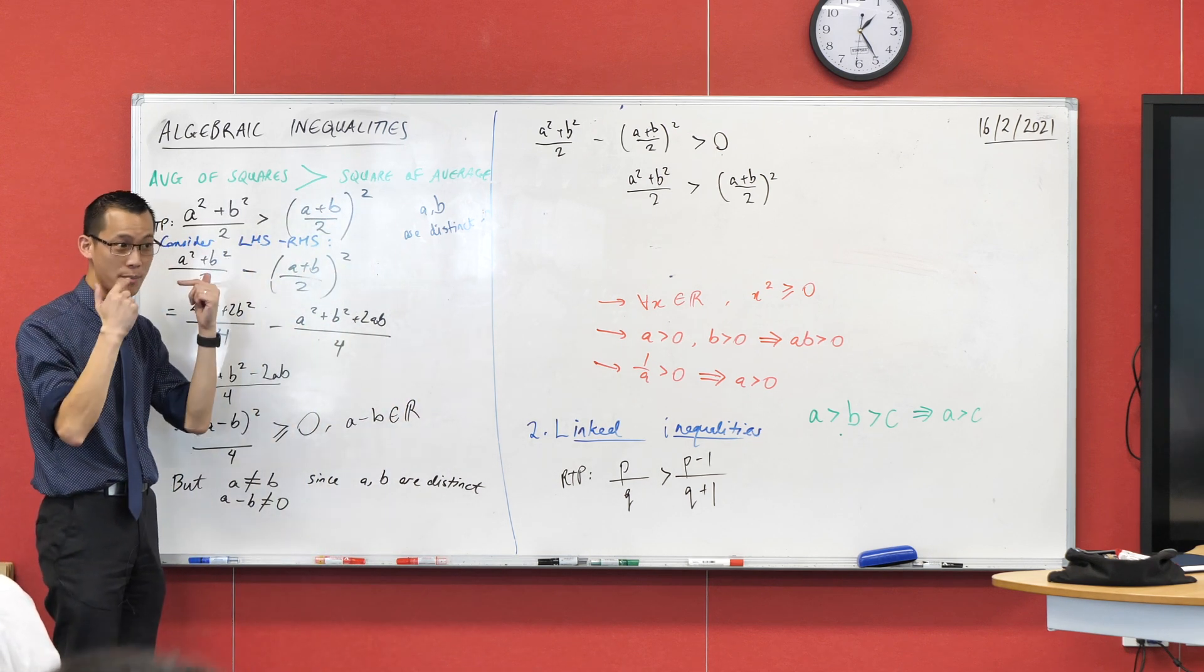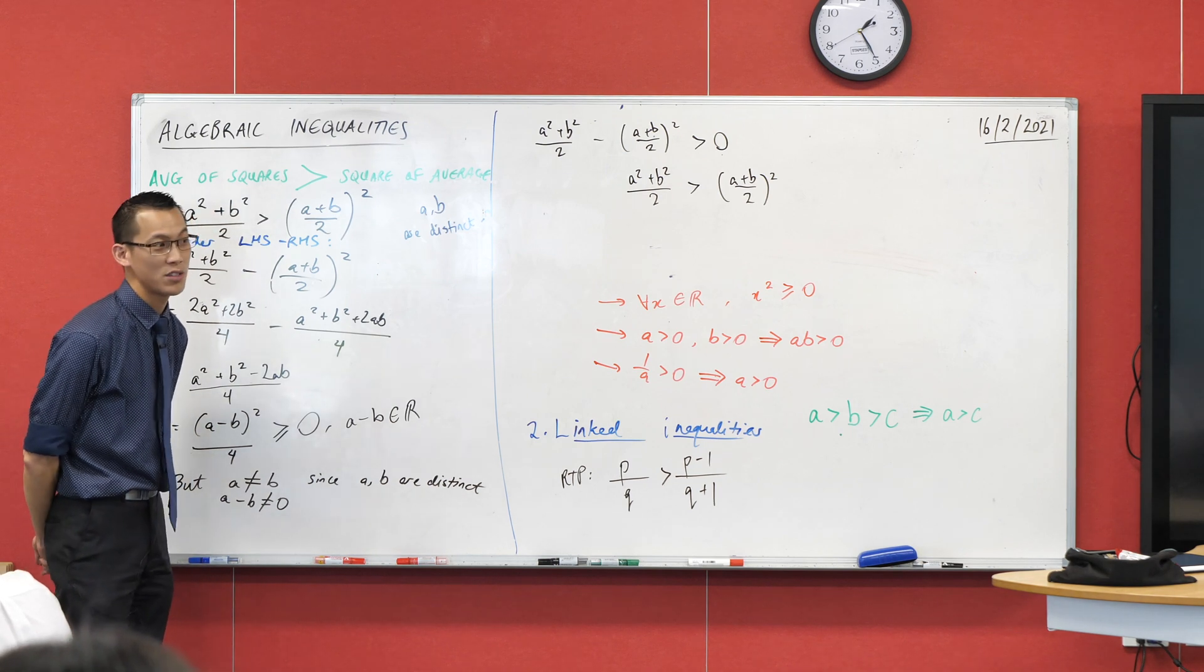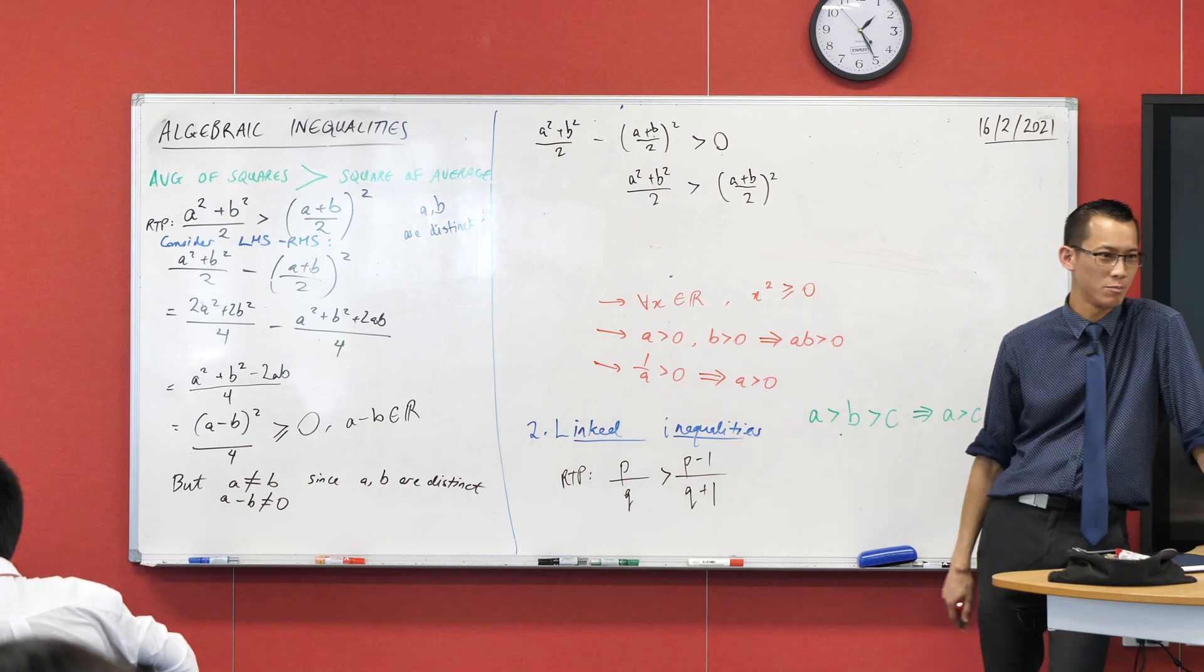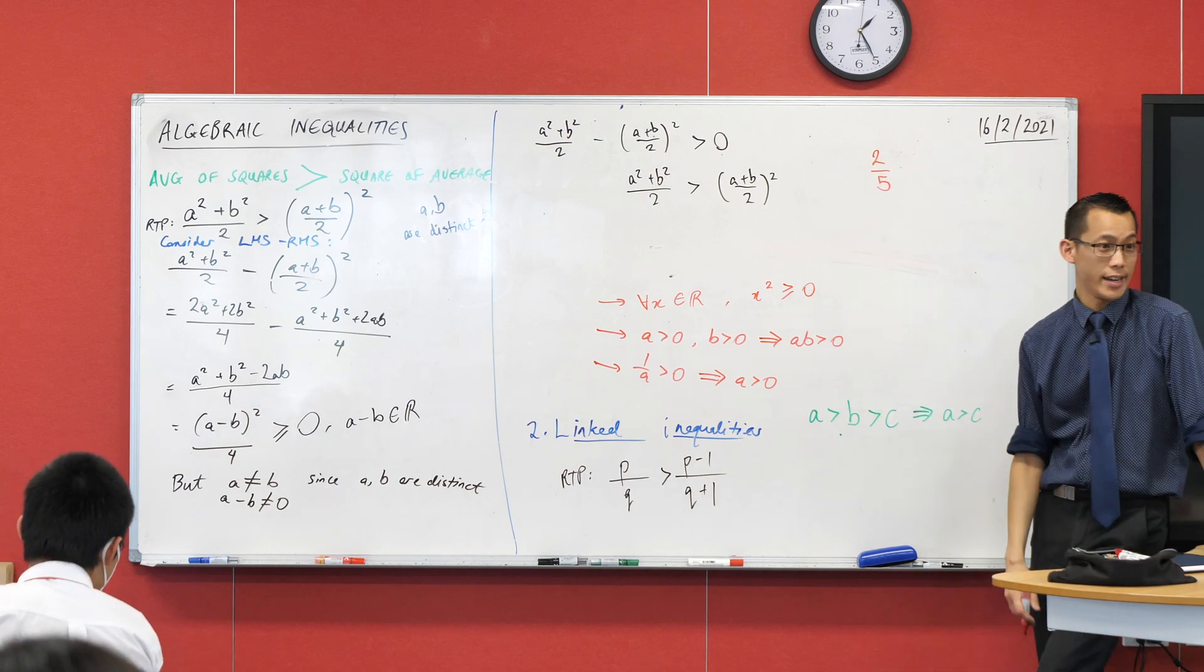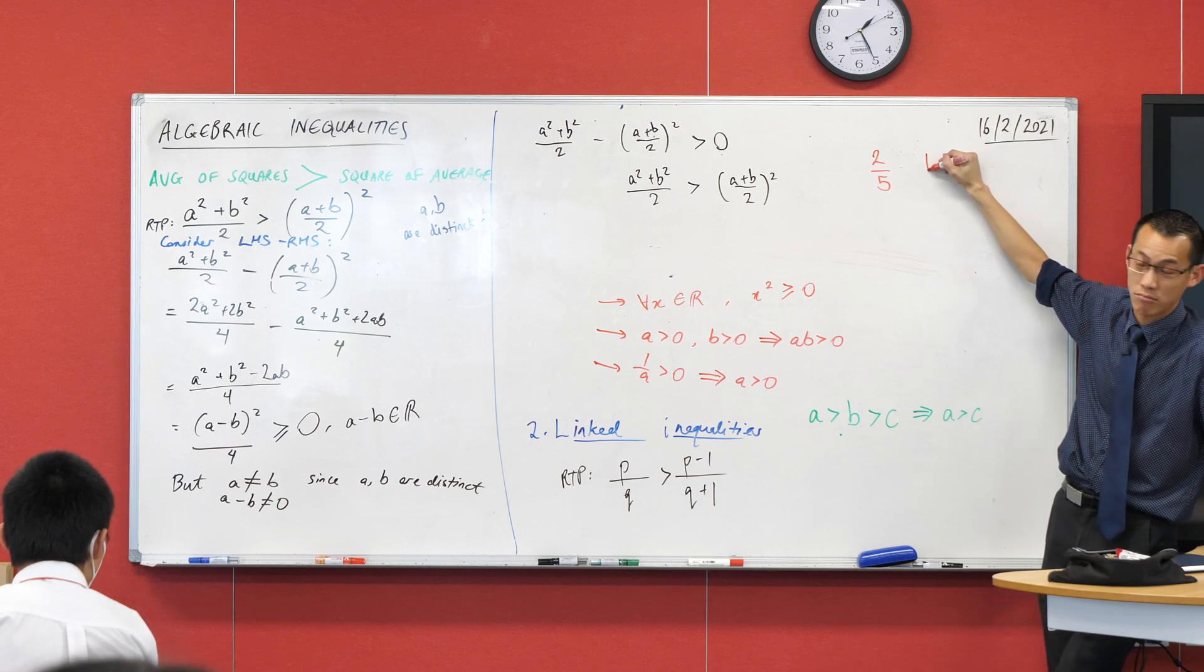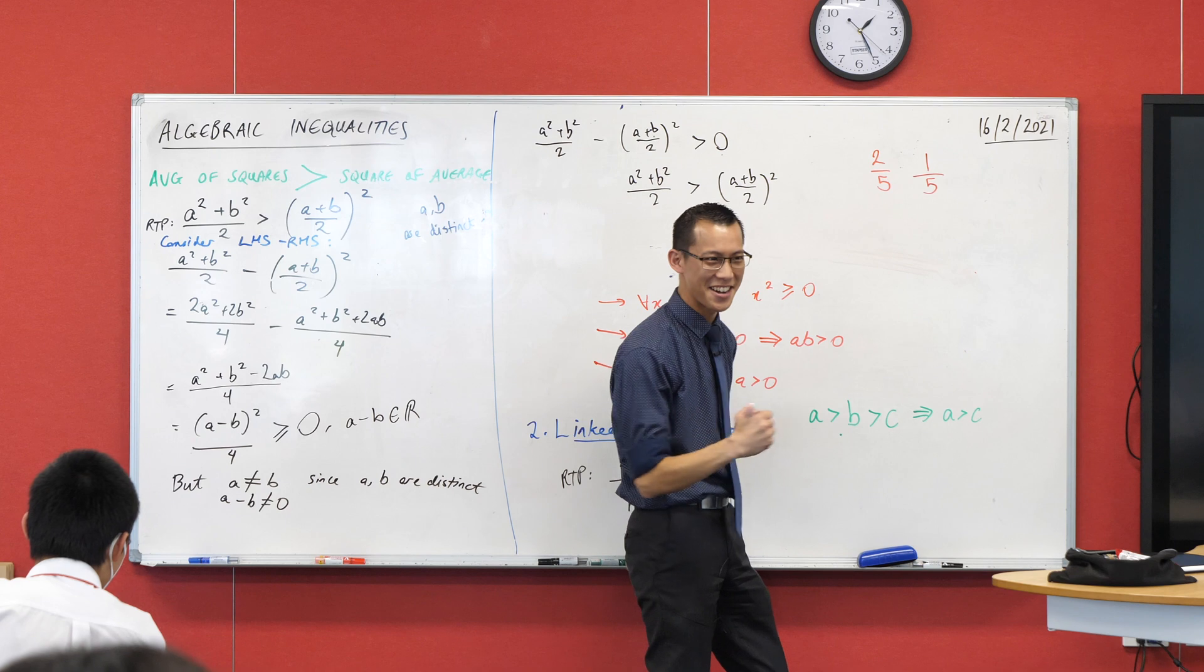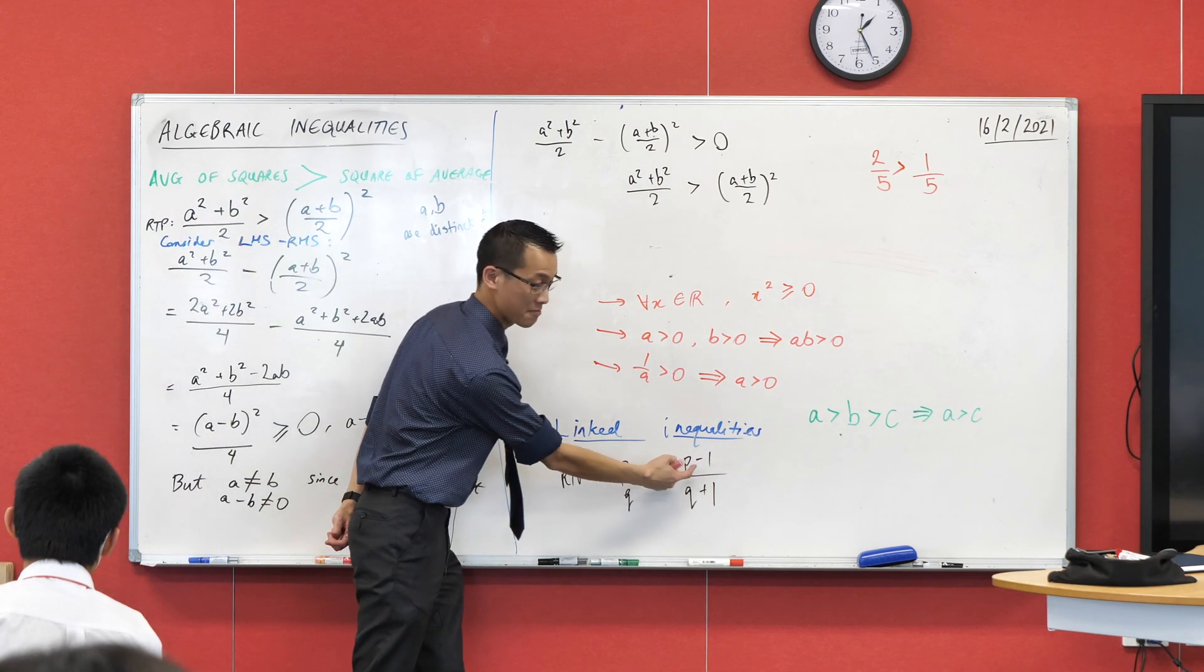But if you think about this, maybe a numerical example might help you here - not as a proof, but to help you think about the structure of your proof. This is like a one and a half line proof just by using linked inequalities. Give me an example of P over Q - just think of a couple of numbers. Two over five? Sure, two over five. Do you agree I can make an ordering statement about this fraction if I subtract one from the numerator? What's the inequality you can say between these two fractions? Two fifths is bigger than one fifth.